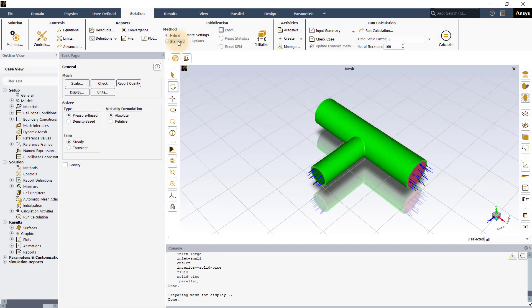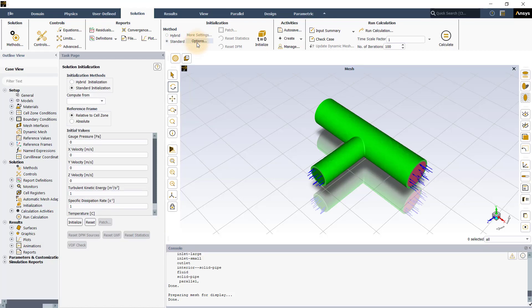Let us use the same problem again, but now we will perform the standard initialization. To employ this method, select standard from method in the initialization group and click on options to view and edit the initialization values.